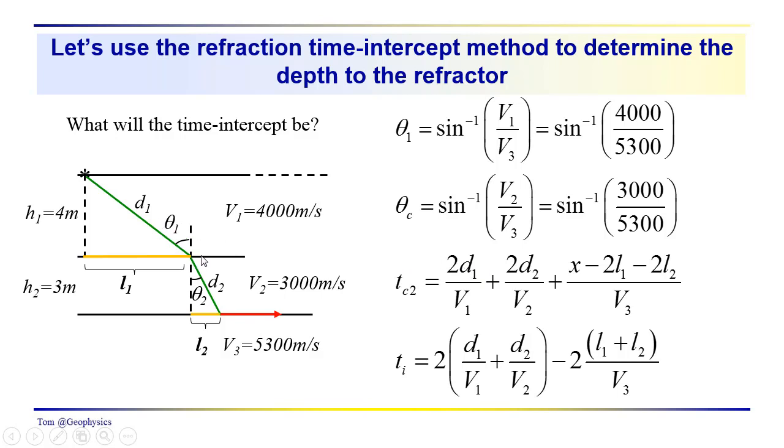So we have the downward and upward segments. So we have a factor of two in here, remember. So we have 2D1 over V1 plus 2D2 over V2. And then we have the path along the interface, which is the total source receiver offset minus twice the projections of the ray paths onto the interface. So we have minus 2L1 minus 2L2 over V3. Now the intercept is the value that we would have when x is equal to zero. So this would be the intersection of the critical refraction if we were to extend it over to the time axis at x equals zero. And that is just simply going to be these terms without the x.